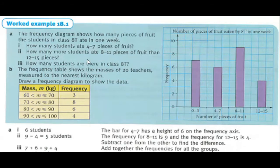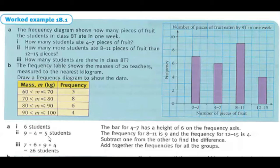Second part: How many more students eat eight to eleven pieces of food than twelve to fifteen? First we will find eight to eleven, that is nine, and twelve to fifteen, that is four. So nine minus four, that is five. So I will write here nine minus four, that is five students.